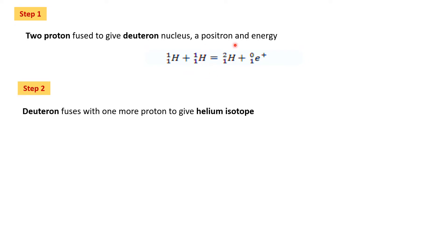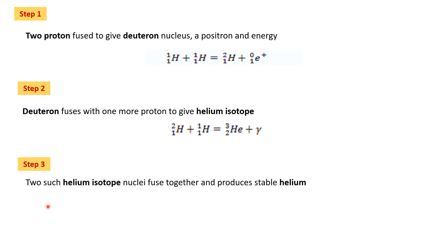The output of step one is deuterium (deuteron). That deuteron combines with one more proton and produces a helium isotope; the energy released is denoted by gamma. So deuteron plus proton produces a helium isotope. Then two such helium isotopes fuse together to produce stable helium and release two protons. This is the proton-proton cycle.